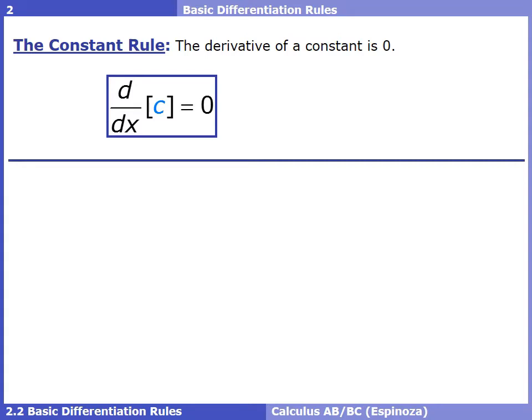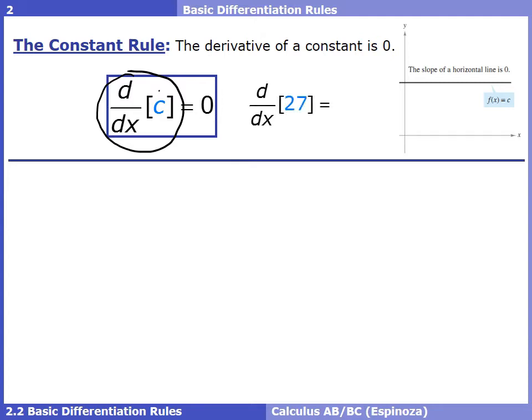Now let's go over the constant rule. The derivative of a constant is zero. This notation is telling you to take the derivative of a constant c with respect to x. Why is it zero? Just remember what a derivative is — the derivative is slope. If you graph a constant, that's just a horizontal line, and we know the slope of a horizontal line is zero. It doesn't matter what the number is. The derivative of 27 is zero; the derivative of a billion is zero.